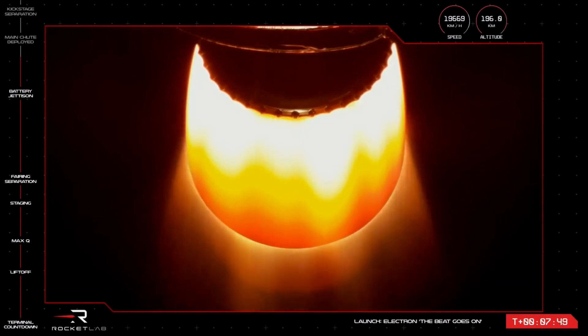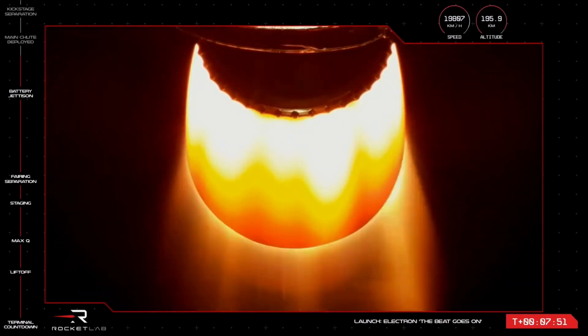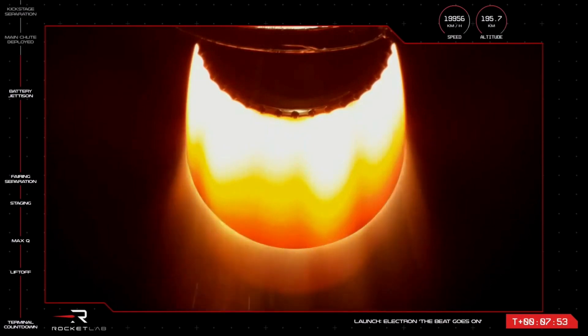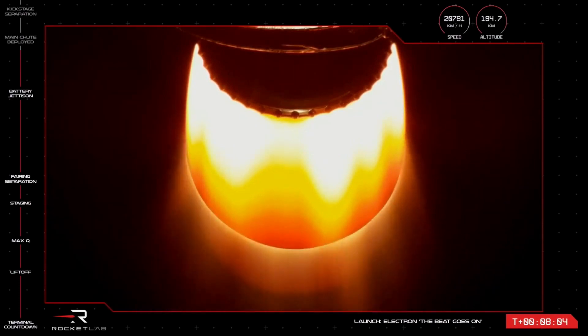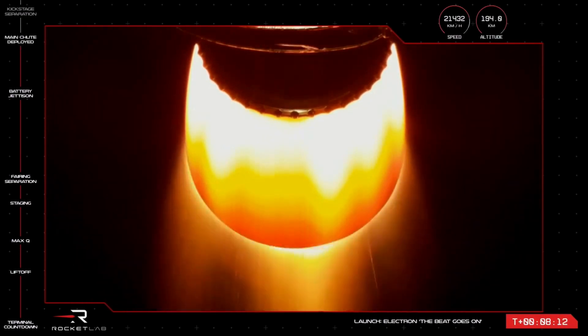You saw it there for a brief second, but it looks like we have actually lost the video connection to Electron's booster coming back to Earth there. That's not to be unexpected, so don't panic. It's when the stage moves out of range to receive the live camera telemetry. We are still expecting the first stage's main parachute to deploy shortly, at about eight minutes into the mission. And we'll continue to listen in to Mission Control to hear whether that's gone ahead.